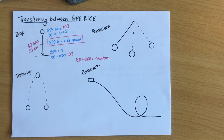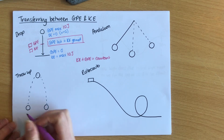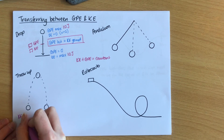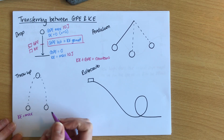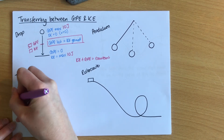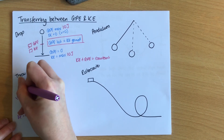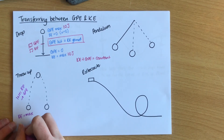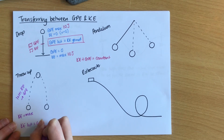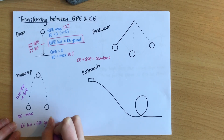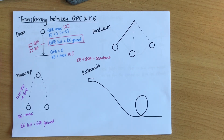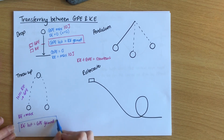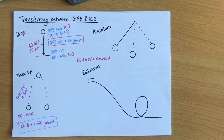Slightly more complex than dropping a ball is throwing a ball up into the air and then catching it. When we throw a ball up into the air, we start it off with some KE — here it's actually going the fastest. At the bottom, when we're throwing it, the KE is at maximum. As it rises, it loses KE which becomes GPE. We can write another equation: the KE lost equals the GPE gained. This is when things are going up — it's the opposite equation.